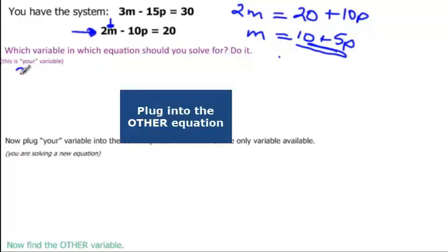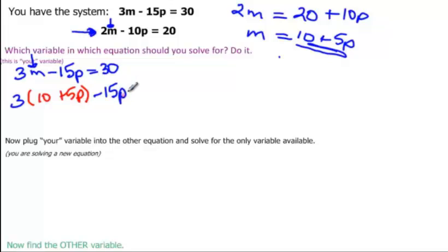So plug my variable into the top equation. So this time I have to go into, I don't have a choice because I solved the second equation. I've got to go into the top equation. And I'm going to substitute for m. So 3 times 10 plus 5p, that's what we said m was equal to, minus 15p will equal 30.